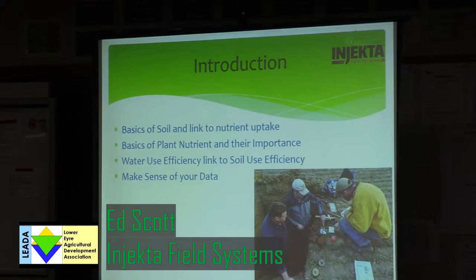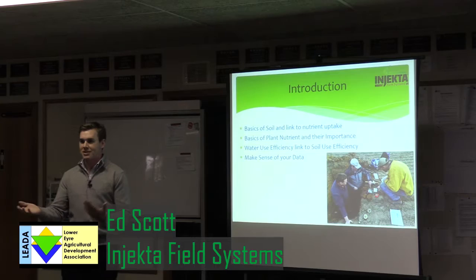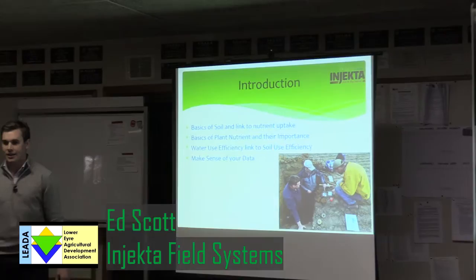The basics of plant nutrients and their importance. There are essentially 16 essential nutrients to grow a plant — 16 Lego blocks, that's all you've got to deal with, just different volumes of them. Some the soil is already providing for you; others you've got to time their applications to get them into the system.